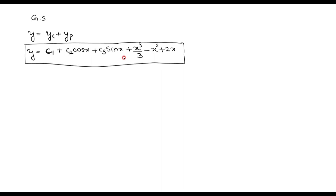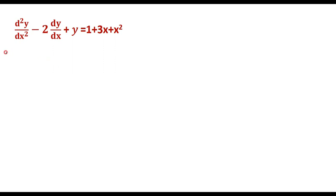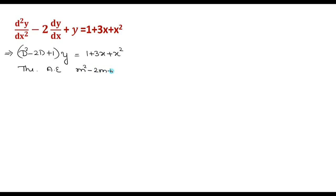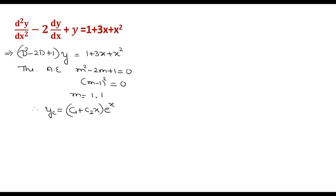We will now do one more problem of the same type. The given differential equation is (D² minus 2D plus 1)y equals 1 plus 3x plus x². Write the auxiliary equation: m² minus 2m plus 1 equals 0. This factors as (m minus 1)² equals 0, so m equals 1 and 1 — repeated roots. Therefore, the complementary function for repeated roots is (c₁ plus c₂x)e^x. For the particular integral, yp equals (1 plus 3x plus x²) divided by (D² minus 2D plus 1).